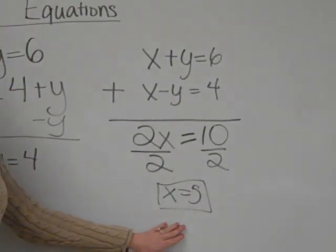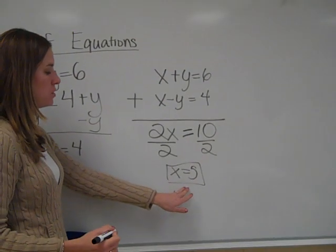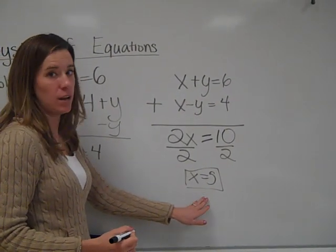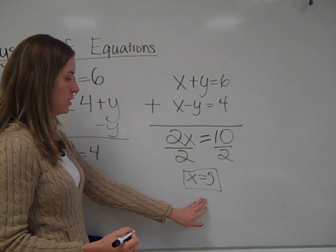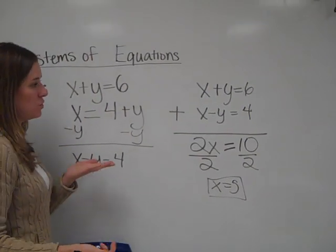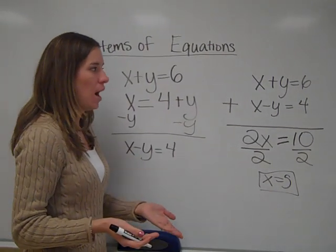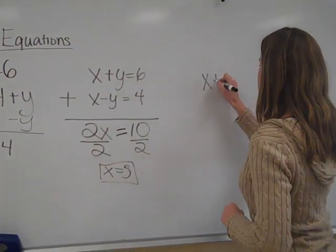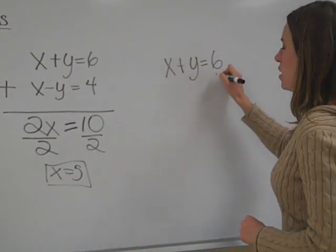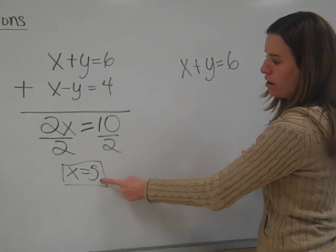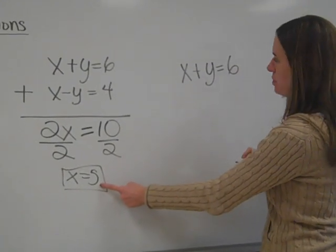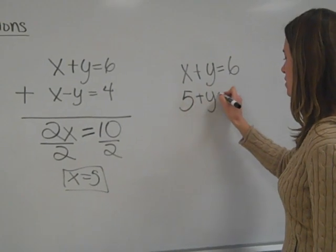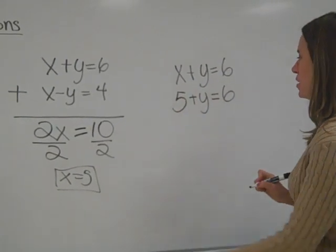We divide both sides by 2, and we get x equal to 5. Right now, that's half of our answer. So now we have to use what we know and plug it back into the formula to find out what y is equal to. You can choose either equation that you want — I'm just going to choose the first one: x plus y is equal to 6. We just found out that our x is equal to 5.